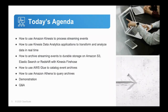On today's agenda, we're going to talk about how to use Amazon Kinesis to process streaming events, how to use Kinesis Data Analytics applications to transform and analyze data in real-time, how to archive streaming events to durable storage on Amazon S3, Elasticsearch or Redshift with Kinesis Firehose, how to use AWS Glue to catalog event archives, how to use Amazon Athena to query archives, and then we'll follow that up with a demonstration and Q&A.